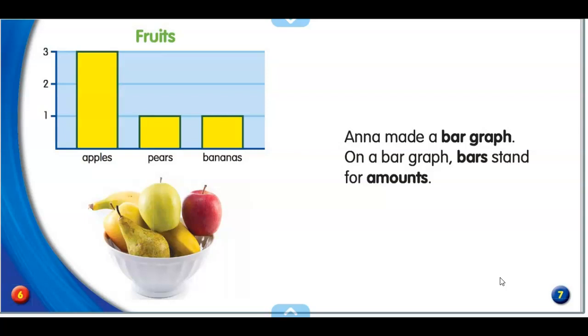Anna made a bar graph. On a bar graph, bars stand for amounts. There's the title. There's numbers on a bar graph. Here are the bars and the labels. Apples, pears, bananas.